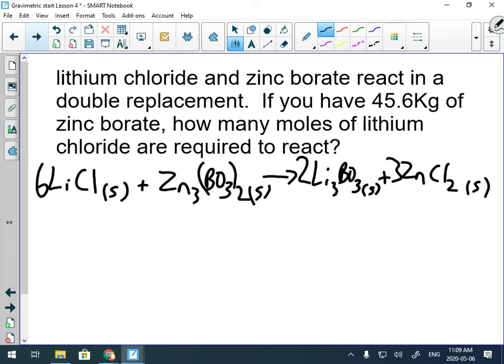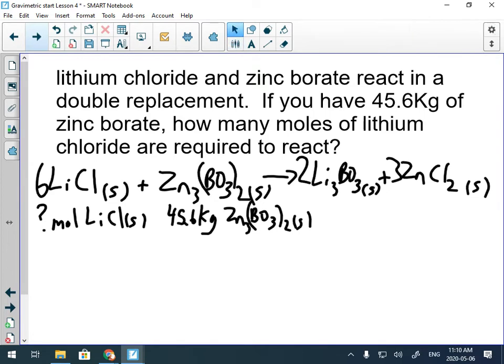So let's start writing down what we know. We have 45.6 kilograms of zinc borate. How many moles of lithium chloride are required to react? So it's on the same side. That's funny. Okay. There are a couple things I'm missing. Where do I need to calculate molar mass? Do I need to calculate the molar mass of this? And the answer is no, because I don't have a mass variable that matches it. Do I need to calculate the molar mass of zinc borate? And the answer is I do, because this is a mass variable. Mass and molar mass go together.